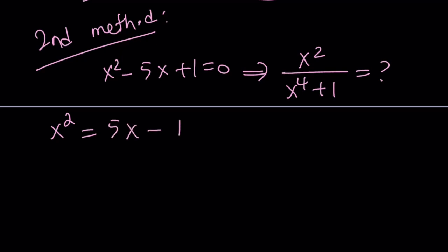Since this is a polynomial, I can evaluate higher powers by using this fact that x squared equals 5x minus 1. And since I need x to the 4th power, it would make sense if you squared both sides. And if you do, you're going to get 25x squared minus 10x plus 1.